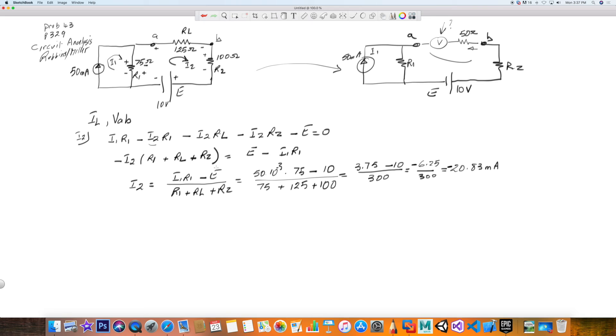Minus, negative, right? So I can tell which way IL is heading - it's going to be the opposite of I2. That's great. Now, how about VAB? Well, VAB is going to be equal to I2 times RL. So that's not a problem. So we're going to do your 20.83 times 10 to the minus third times 125. Let's see what is that - times 125, that's 2.6 volts.